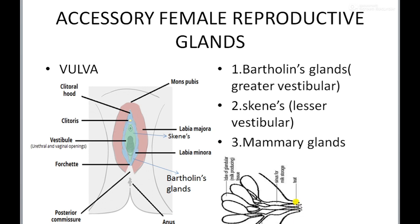The mammary duct contains an ampulla region, where the dilation of the tubule is known as the ampulla. Milk is temporarily stored here, and from the ampulla the lactiferous duct opens out through the nipple. At the tip of the nipple, lactiferous ducts open and milk is sucked by the child. Below the nipple, a brown structure known as the areola is present, where ampullae are located. Between the mammary lobes, fat tissue is present. The breasts develop after puberty and increase in size during pregnancy.